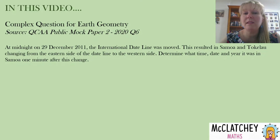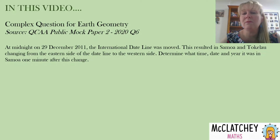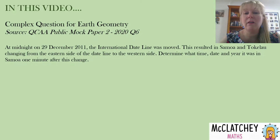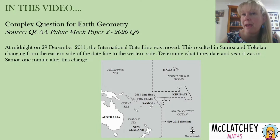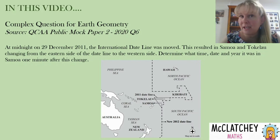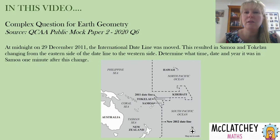At midnight on the 29th of December 2011, the international dateline was moved. This resulted in Samoa and Tokelau changing from the eastern side of the dateline to the western side. Determine what time, date and year it is in Samoa one minute after the change — they provide a map in the question to help guide your answer. I'm not going to go into great detail about how the international dateline works, as that was covered in previous videos, so if you missed those it's worth going back and having a watch.